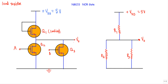The gate terminal of transistor Q1 is connected to the 5-volt source, which means Q1 will always be in the ON state. We design Q1 such that in its ON state it provides a resistance of 100 kilohms, so I can replace the channel of Q1 with a resistance R1 = 100 kΩ.